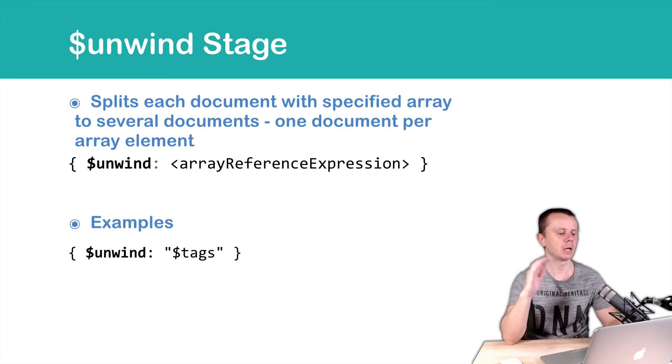Examples. Unwind tags or unwind hobbies. Both tags and hobbies are arrays.